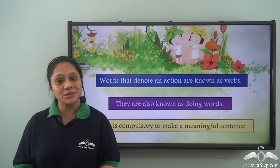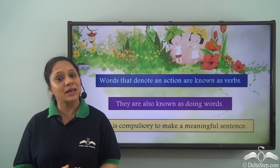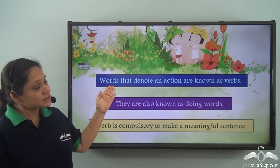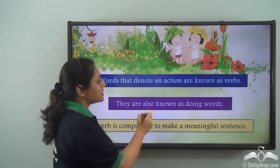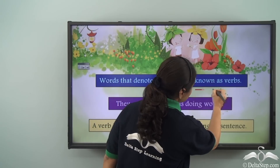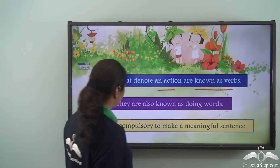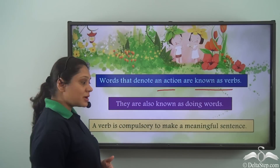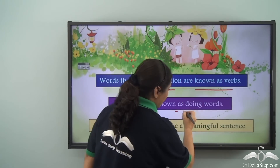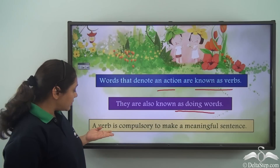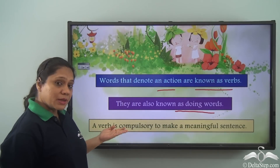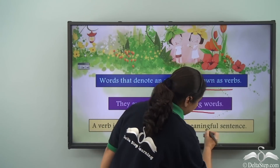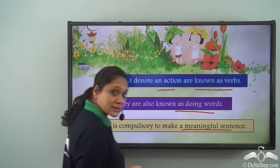We have already learnt about verbs and we know that words that denote an action are known as verbs. They are also known as doing words, and remember that a verb is compulsory to make a meaningful sentence.